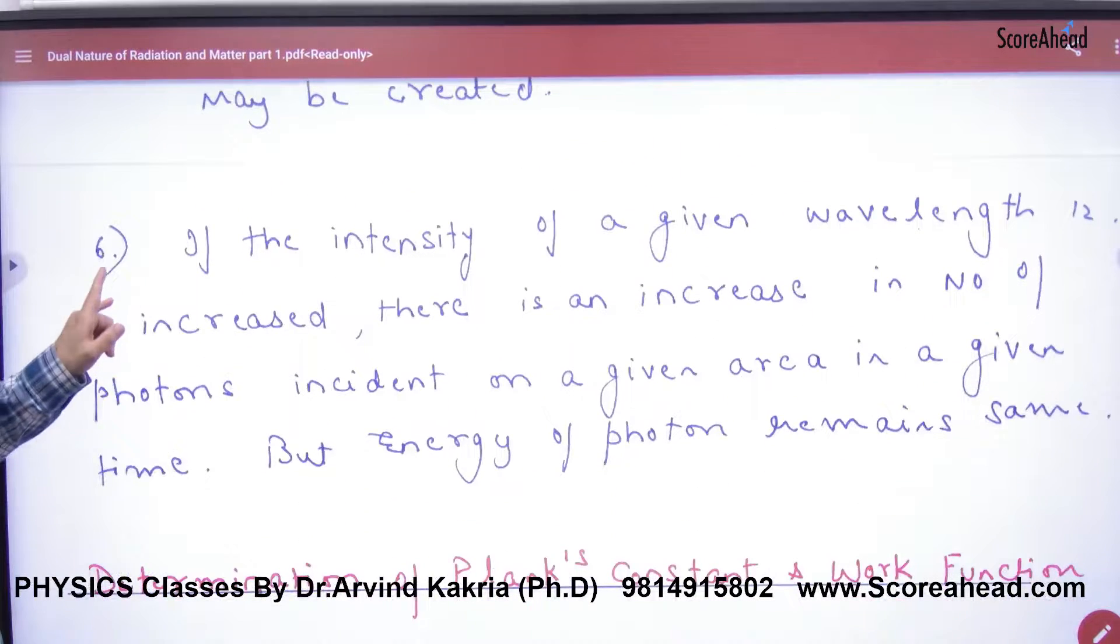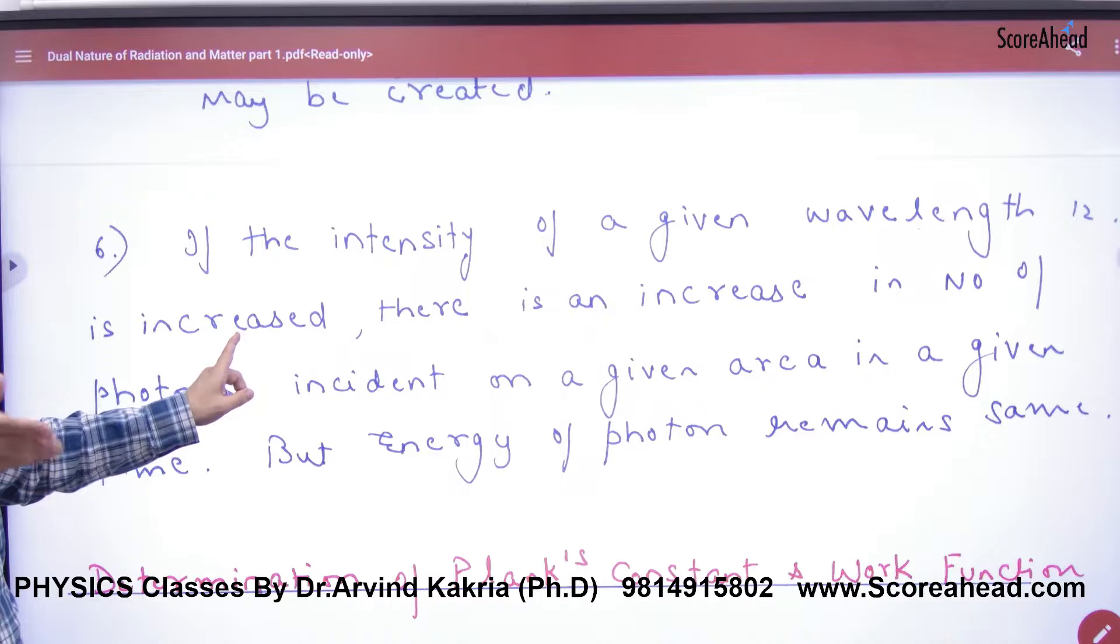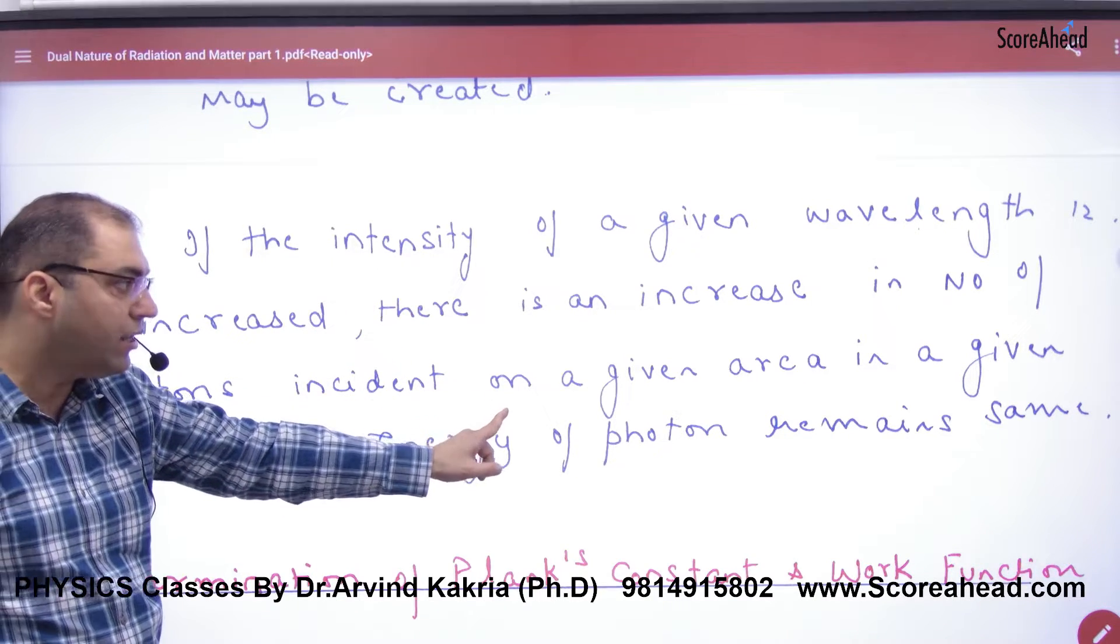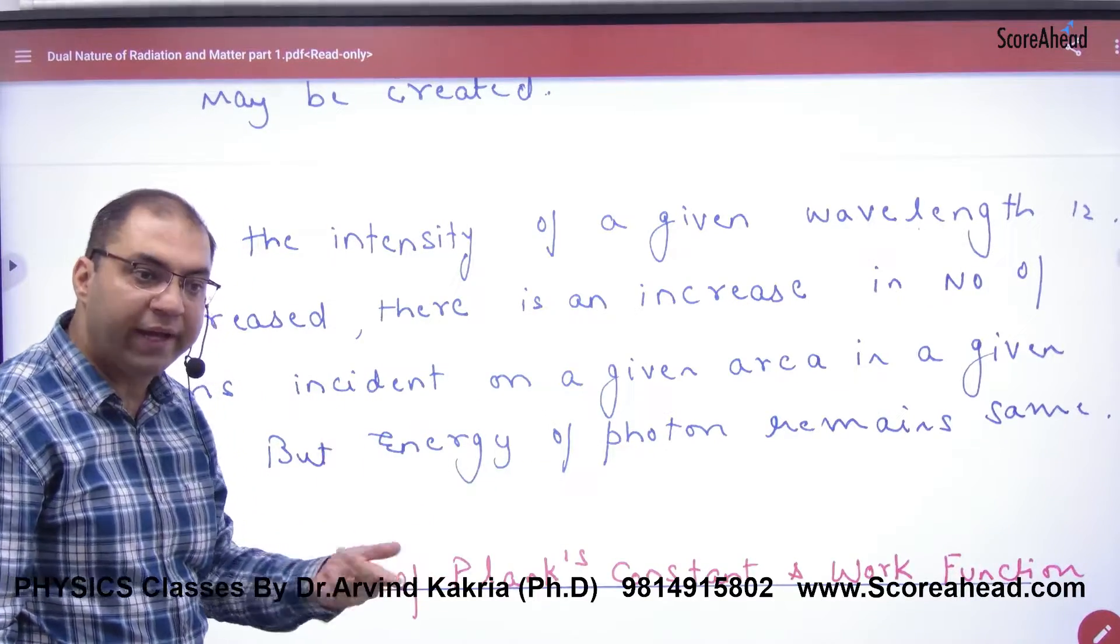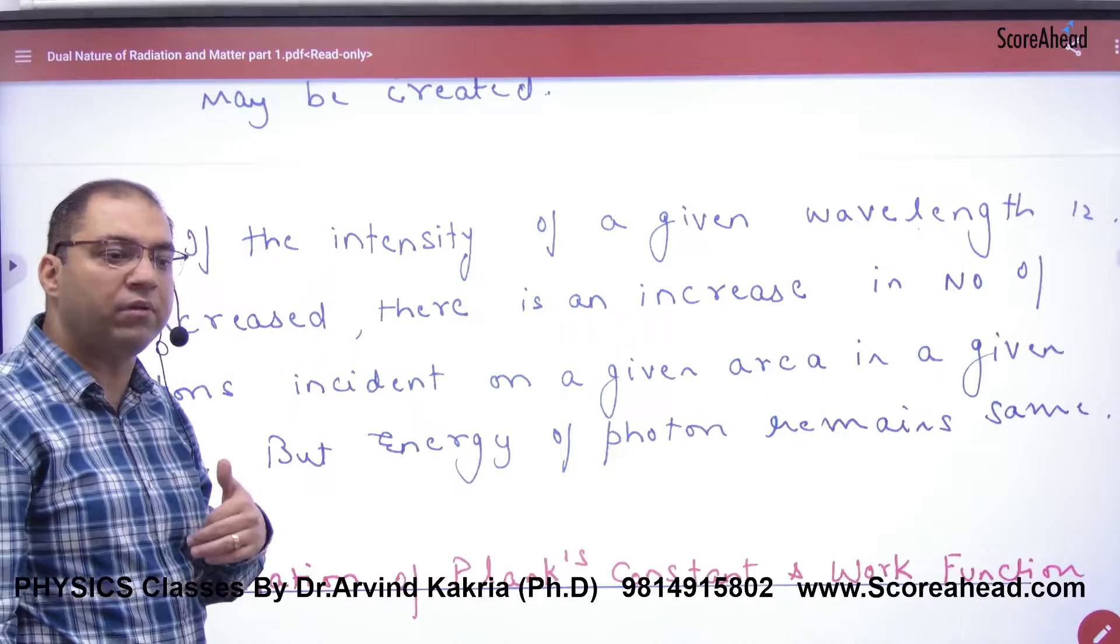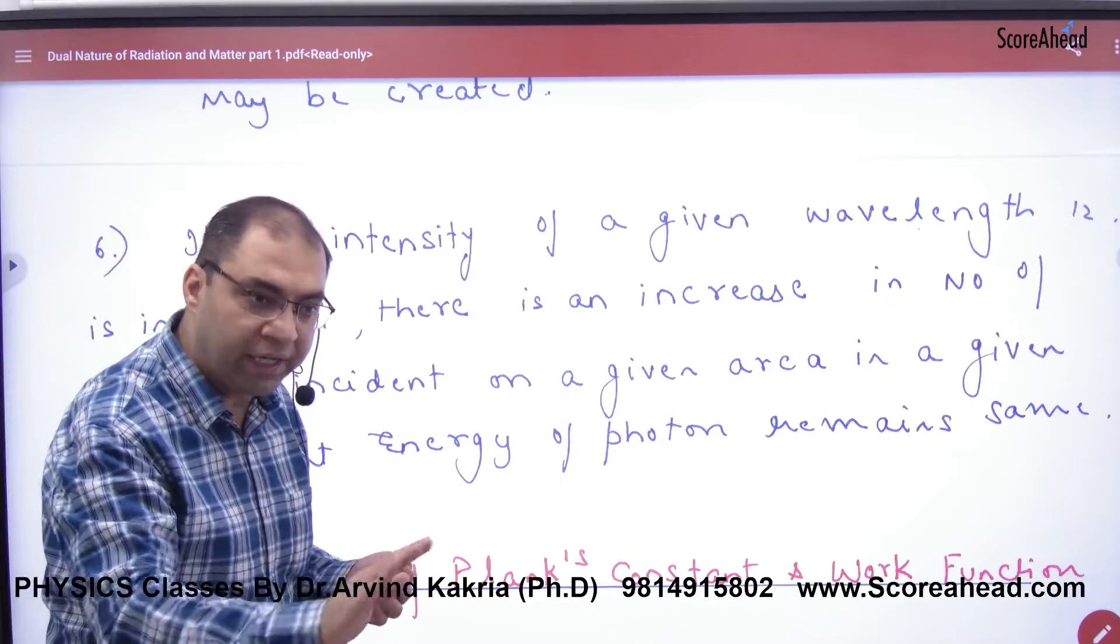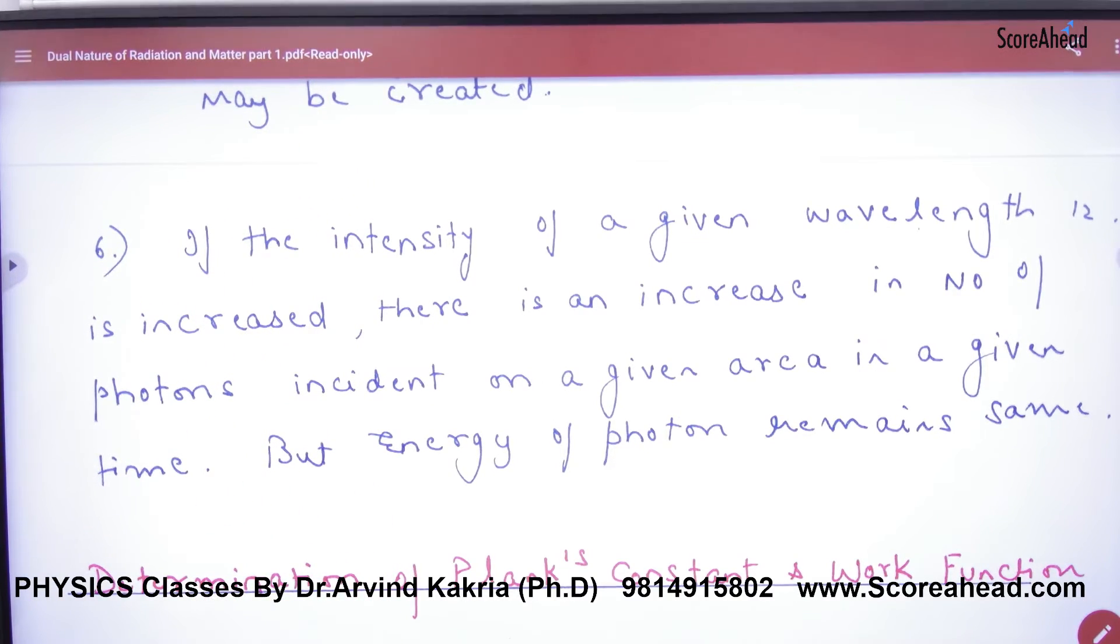If the intensity of a given wavelength increases, intensity means number of photons. There is an increase in the number of photons incident on a given area in a given time, but energy of each photon remains the same. The energy of a photon comes from its frequency. These important points have to be written in the paper.